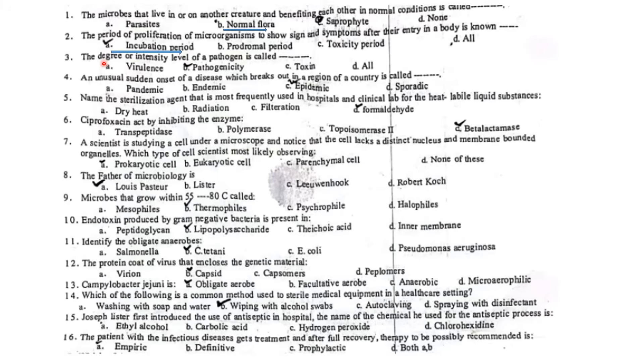The degree or intensity level of a pathogen is called virulence. Virulence is the ability of an organism to cause disease. An unusual sudden onset of disease which breaks out in a region of a country is called epidemic.